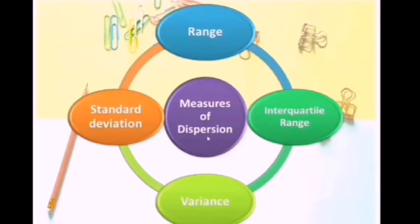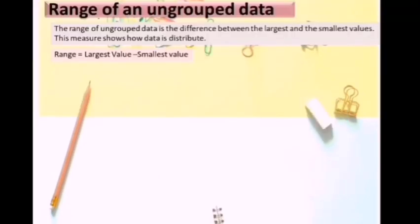In measures of dispersion, we will learn range, interquartile range, variance, and standard deviation. First, we will learn the range of ungrouped data. The range of ungrouped data is the difference between the largest and the smallest value. This measure shows how data is distributed. The formula is: range = largest value minus smallest value.